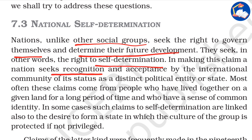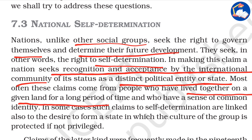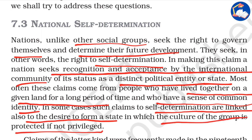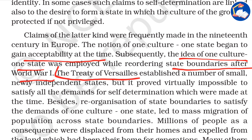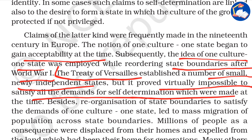Most often, these claims come from people who have lived together on a given land for a long period of time and who have a sense of common identity. Claims of self-determination are sometimes linked to the desire to form a state in which the culture of the group is protected. The notion of one culture, one state began to gain acceptability in 19th-century Europe. Subsequently, the idea of one culture, one state was employed while reordering state boundaries after World War I. The Treaty of Versailles established a number of small, newly independent states, but it proved virtually impossible to satisfy all the demands for self-determination.